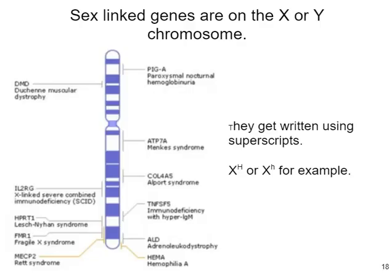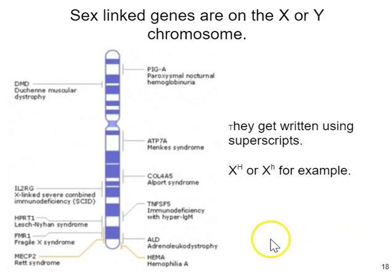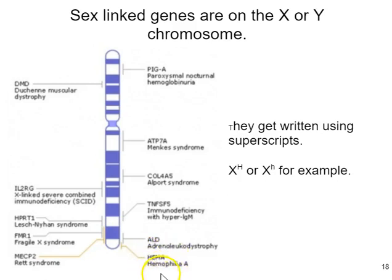These genes that Morgan was studying were on the X chromosome of Drosophila. Shown here is an image of a human X chromosome with some of its genetic content marked. Drawing attention to a gene called HemA located at the distal end of the X chromosome on the long arm — the Q arm — this gene is associated with a genetic condition called hemophilia A.